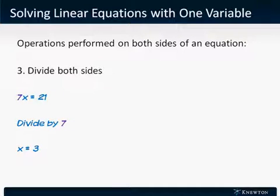Division. 7x equals 21. Divide both sides by 7 to get x equals 3.